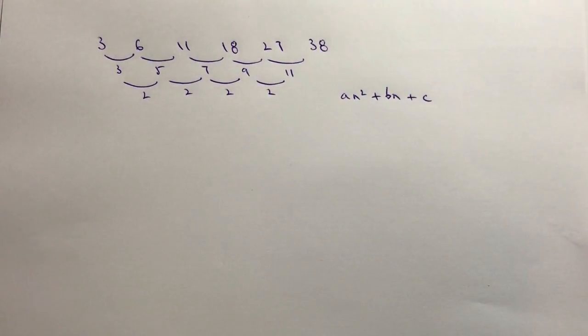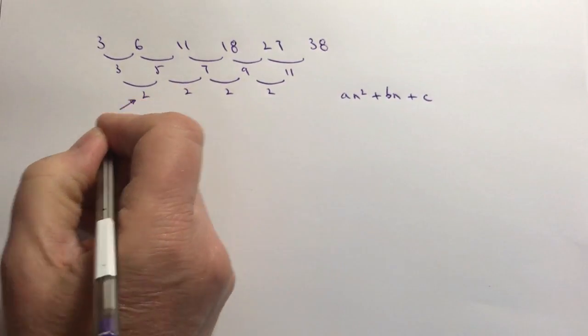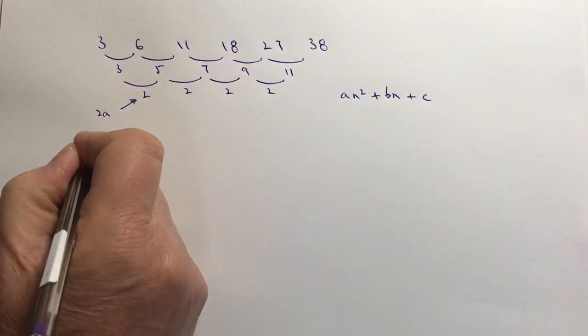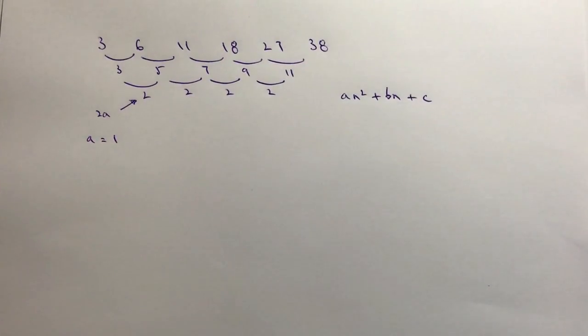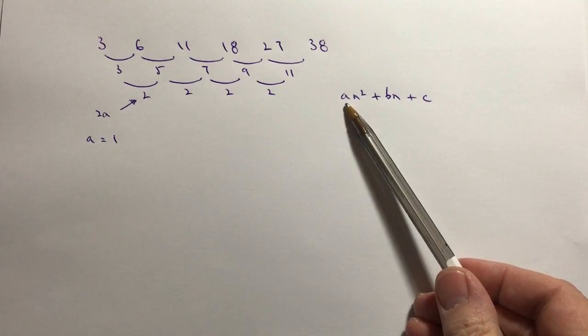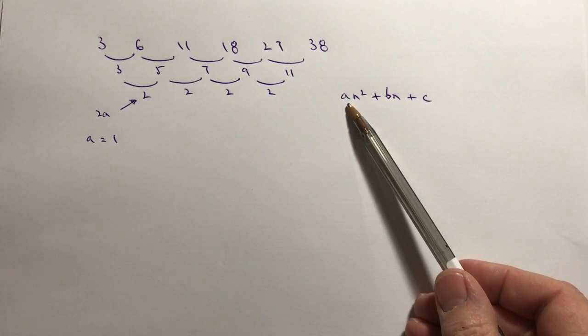Now as I said in the previous video, most people are aware that this value here is the value of 2a. In other words, in this particular sequence a equals 1, so that's going to be the first number that I'm going to put into here and I'd write that as 1n squared.